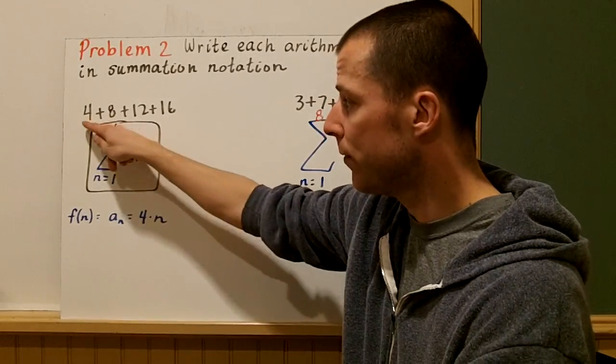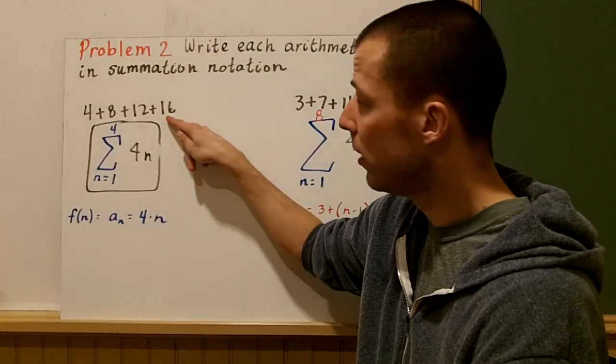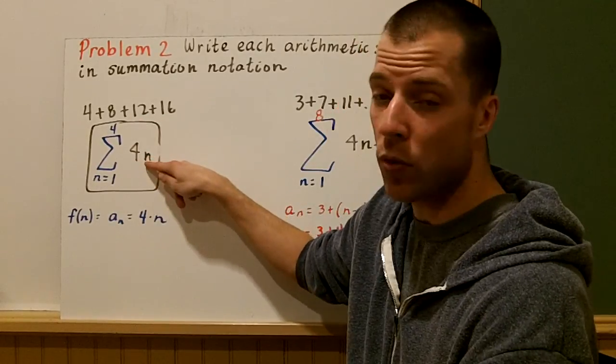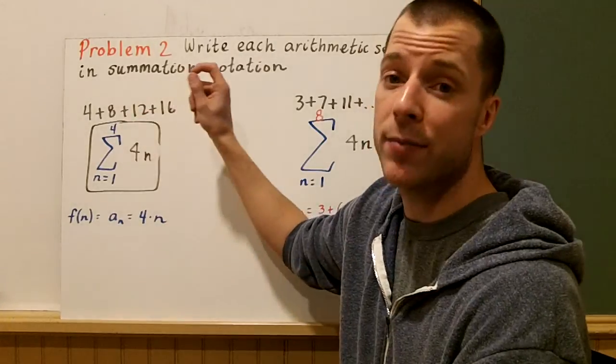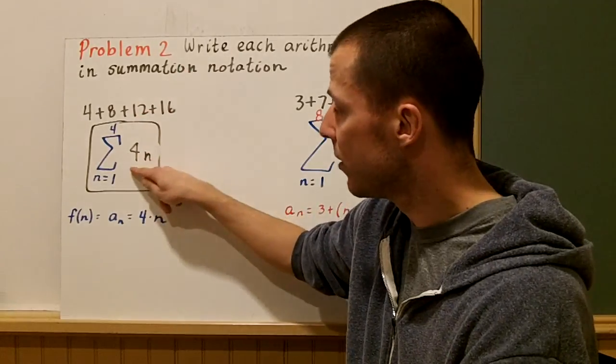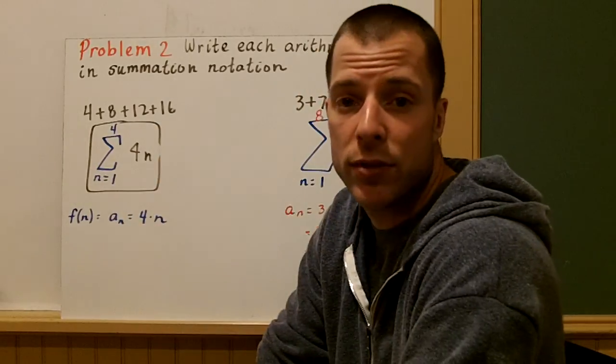Writing the rule is pretty simple. 4 times 1, 4 times 2, 4 times 3, 4 times 4. So it's just 4 times whatever term you want. The third term is 12. 4 times 3 is 12. So there's our rule, and that's our summation notation.